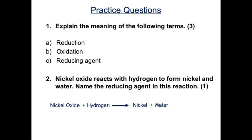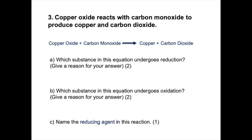Now let's test your understanding with some practice questions. Question one is asking you to explain the meaning of the following terms. Question two involves nickel oxide reacting with hydrogen to produce nickel and water, and it's asking you to name the reducing agent in this reaction. Pause the video and have a go at these two questions. Question three: copper oxide reacts with carbon monoxide to produce copper and carbon dioxide. Part A asks which substance undergoes reduction — give a reason for your answer, two marks. Part B asks which substance undergoes oxidation — give a reason for your answer, two marks. Part C asks you to name the reducing agent in this reaction, one mark. Pause the video and have a go.